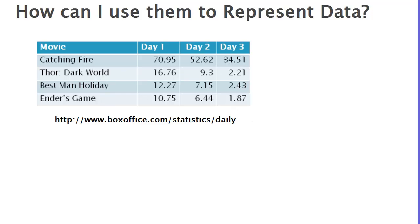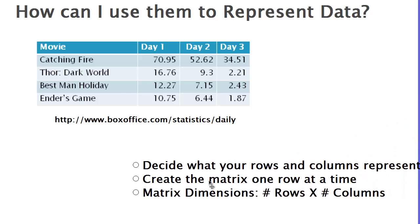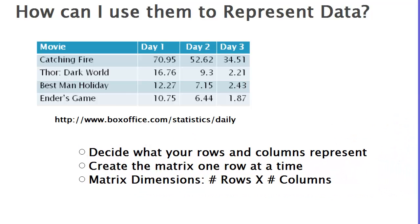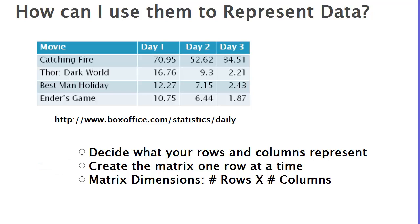There's a three-step process for using matrices, at least initially setting them up to represent data. First, decide what your rows and columns are going to represent — often if your data is already in a table, use the rows and columns from that table. Then create the matrix one row at a time. Finally, you need to establish your matrix's dimensions, which is the number of rows times the number of columns.